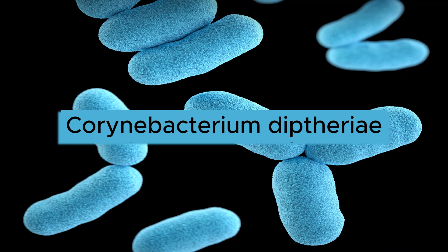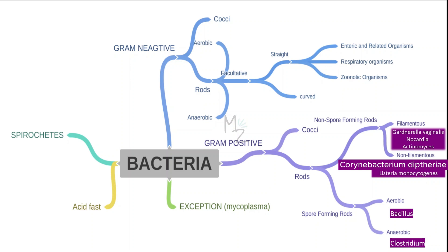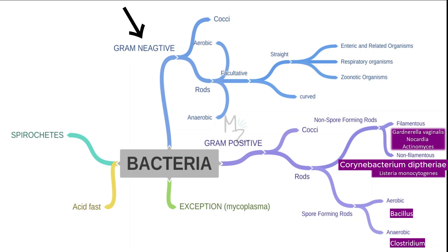Have a cup of tea and let's get started. Before talking about Corynebacterium diphtheriae in detail, we should know how the bacteria is classified. Bacteria are further classified into Spirochetes and Acid-fast, also Mycoplasma bacterium — that's an exception. On the basis of gram staining, bacteria are further classified into gram negative and gram positive. Gram positive are further classified into cocci and rods.